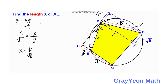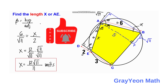If we rationalize, x is equal to 12 square root of 11 over 11 units, and that is our answer. Thank you for watching until the end of the video. Please like the video if you like our solution, and don't forget to subscribe to the channel and hit the bell icon so you'll be updated for more math videos like this. Thank you, bye.